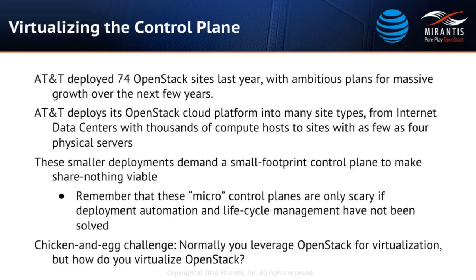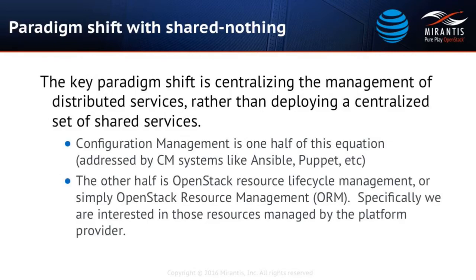Last year at AT&T, we deployed 74 sites. There's another challenge: the paradigm shift that occurs with a shared-nothing architecture. Once you move to a distributed services model with centralized management, the issue becomes building the tooling necessary to manage hundreds of cloud sites. We built a solution called the OpenStack Resource Manager, or ORM. The ORM is essentially a collection of API services with two fundamental pieces. First, it's a resource creation gateway — all resource creation requests such as tenant onboarding, image creation, image updates, flavor creation, and flavor updates all flow through the ORM.